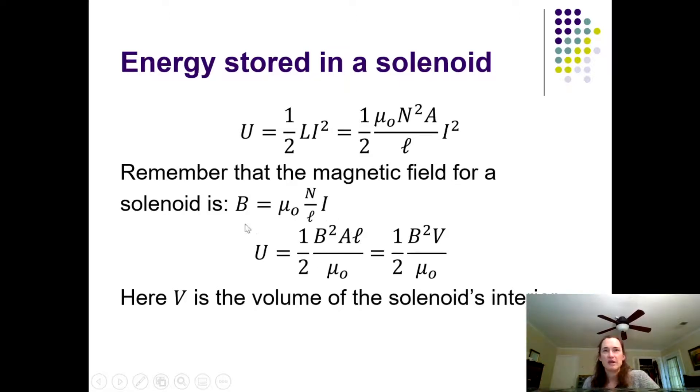Now, if we plug in for B into our equation for U, then we would end up with U is equal to one-half times B squared times A L over mu naught. If you're having a little trouble following the algebra that quickly, pause the video and make sure that you arrive at the same expression for the energy as me. Now, A times L - A is the cross-sectional area of that solenoid and L is the length. So if I multiply those two things together, what I'm really doing is finding the volume of the interior of my solenoid, which I'll call V.